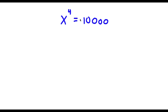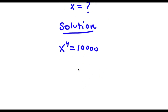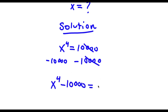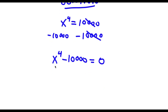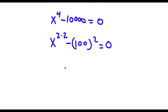Now I have x to the power of 4 is equal to 10,000. Subtracting 10,000 from both sides gives x^4 minus 10,000 equals 0. I can rewrite x^4 as (x^2)^2 since 4 equals 2 times 2, and 10,000 as 100 squared. So I have (x^2)^2 minus 100^2 equals 0.